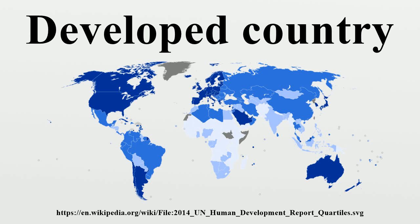According to the World Bank, 80 countries are classified as 'high-income economies'. According to the International Monetary Fund, the following 37 economies are classified as 'advanced economies': Australia, Austria, Belgium, Canada, Cyprus, Czech Republic, Denmark, Estonia.